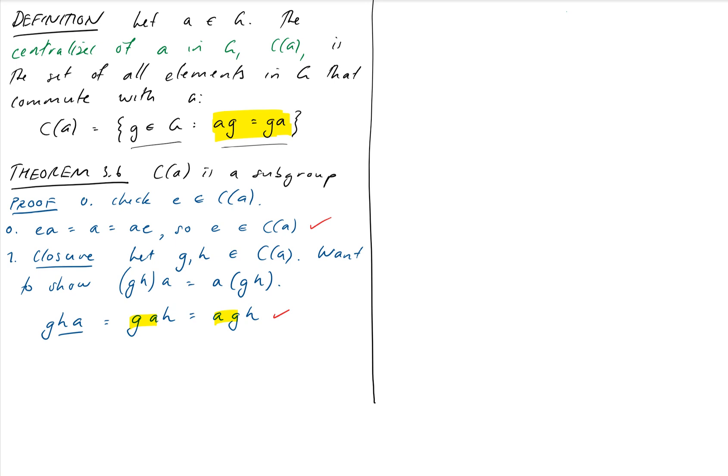And finally, inverses. Let G be a member of our centralizer. Want to show G inverse is also a member of our centralizer, i.e. that G inverse A equals A G inverse.